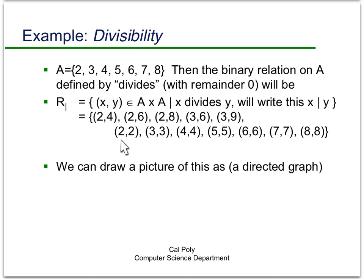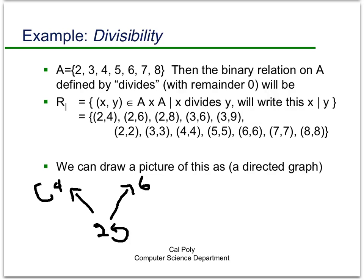Whether or not the ordered pair with the same entry in both slots is included is actually an important thing in many relations. We can draw a directed graph for divisibility too — it's a bit more complicated. For instance, 2 has an arrow to 4 (since 2 divides 4) and to 6; 2 also has a little loop arrow to itself. Similarly, 4 loops to itself, 6 loops to itself, and 3 has a loop and also an arrow to 6. You can fill out the rest of the picture from there.